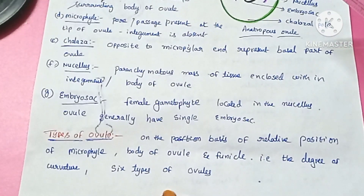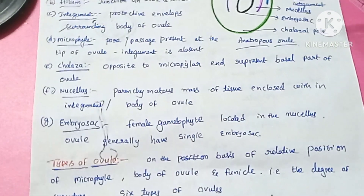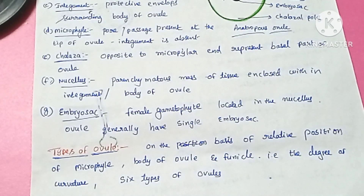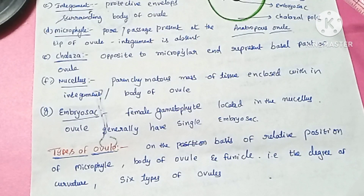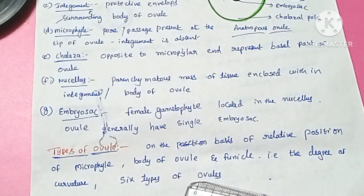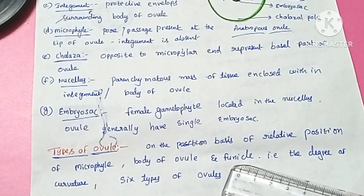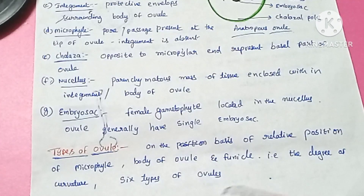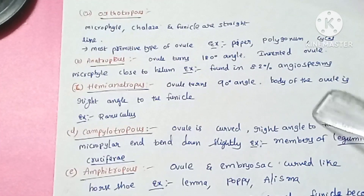Next are the types of ovules. On the basis of the relative position of the micropyle, the body of the ovule, and the funicle — that is, the degree of curvature — ovules are classified into 6 types.